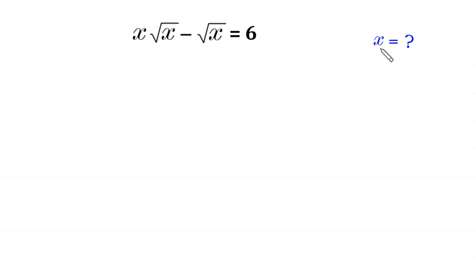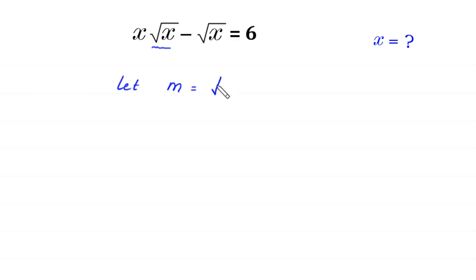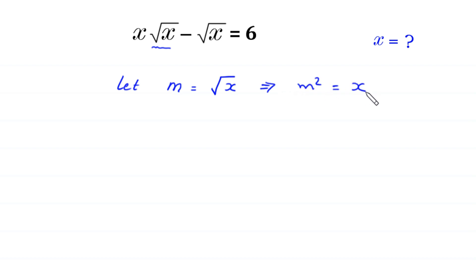Let's start. First of all, we suppose that square root of x is equal to m. So m is equal to square root of x, and if we square both sides of this equation, this implies that m squared is equal to x. Now we substitute m and m squared into the original equation.